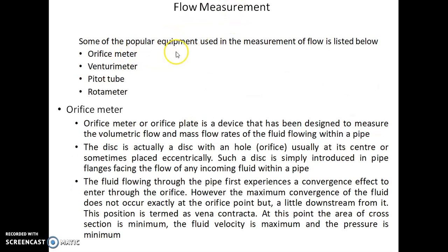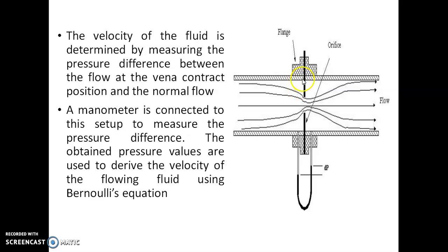The flow measurement devices are: orifice meter, venturi meter, Pitot tube, and rotameter. Orifice meter is a device which consists of a plate with a hole. This plate is placed in the fluid flow or in the pipe.